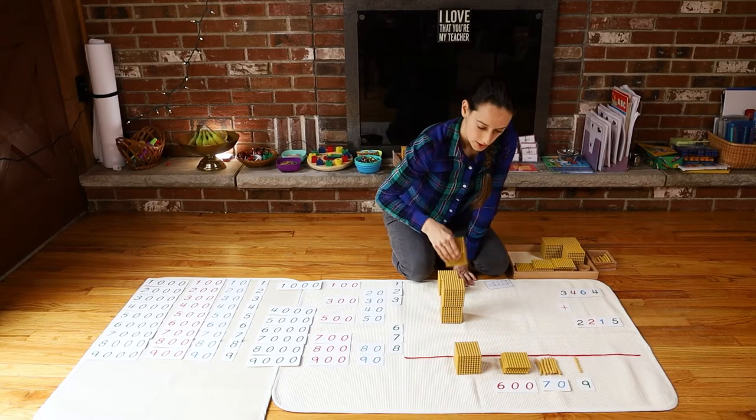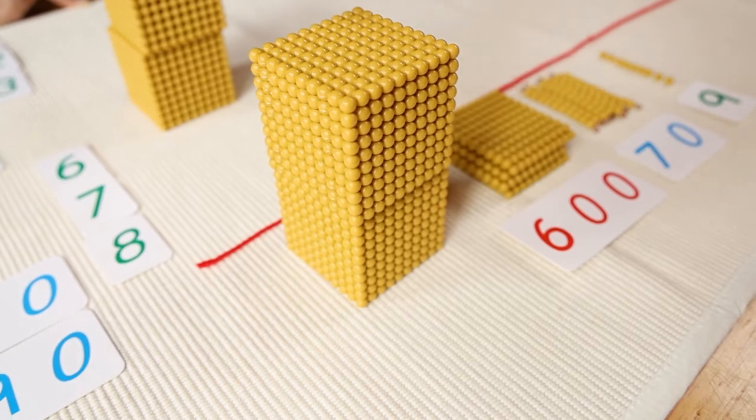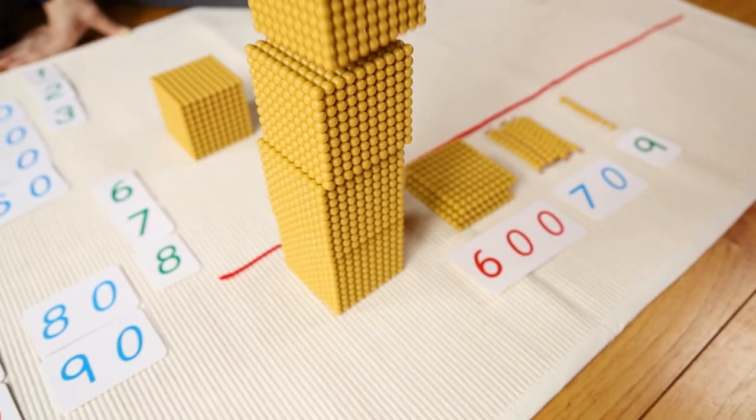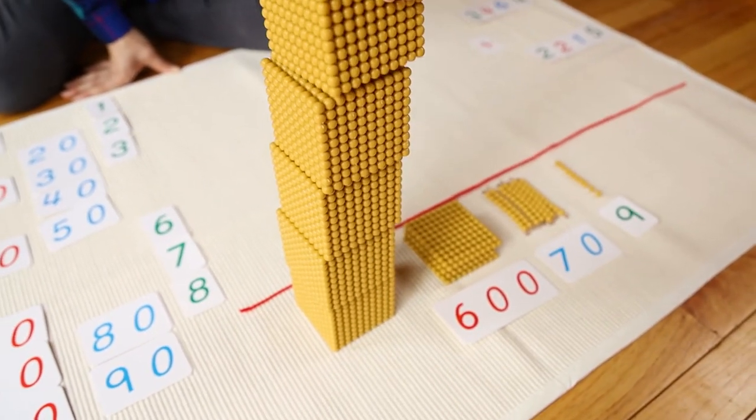One thousand, two thousands, three thousands, four thousands, five thousands.